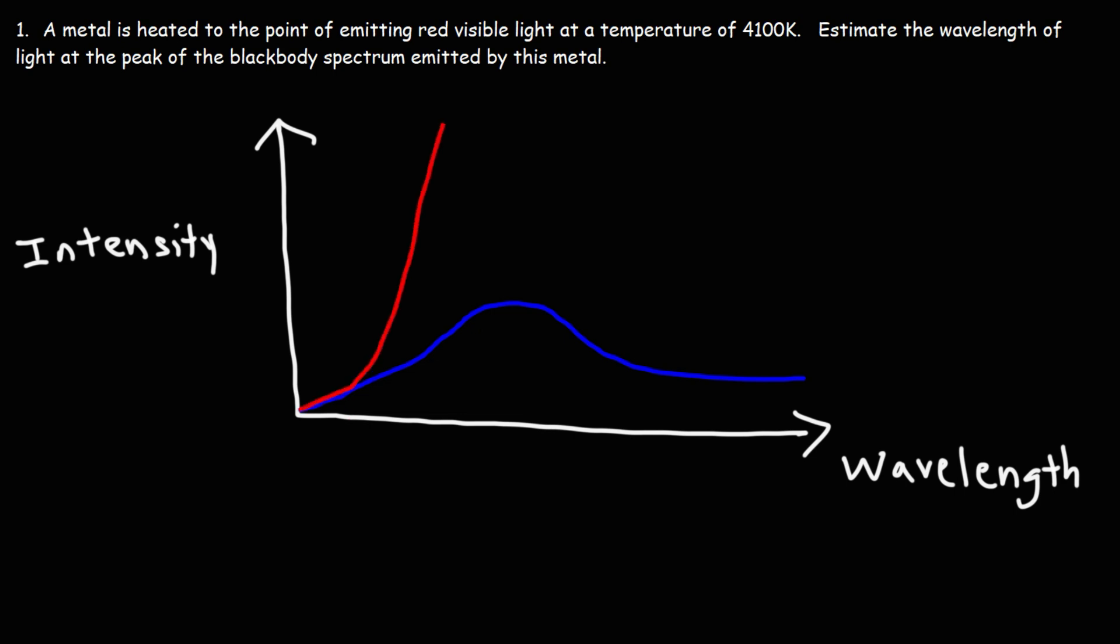Now the high temperature curve and the low temperature curve might be at 2000 Kelvin and 5000 Kelvin respectively. Notice that the wavelength at peak intensity shifts towards the left. For the blue curve, it's right here. For the red curve, the wavelength at peak intensity is lower.